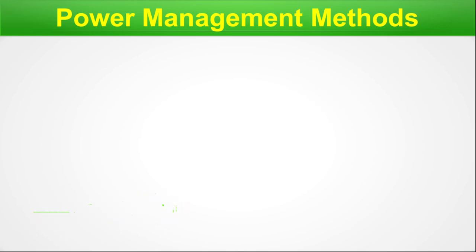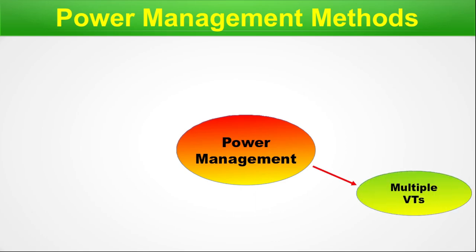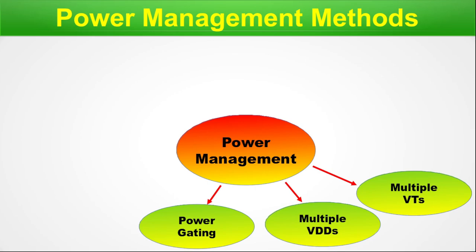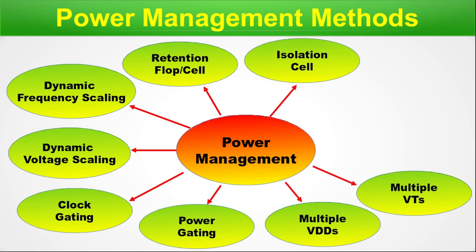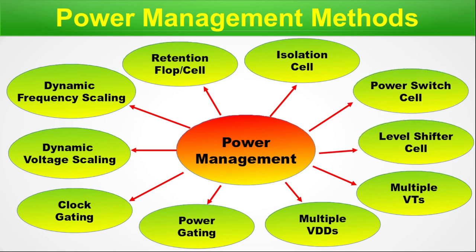Power management methods. In modern-day ICs, power management inside a chip is done through several different ways. The first method is to use multiple threshold voltages (multiple VTs), and we use multiple VDDs for multiple power domains inside a single chip. We use power gating for managing power to different blocks through a PMU (power management unit), clock gating for clock cells, dynamic voltage scaling, and dynamic frequency scaling. From the standard cell families, we use the retention flop, isolation cell, power switch cell, and level shifter cell — four special standard cells used for power management.